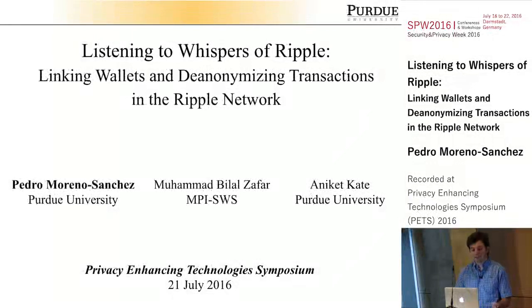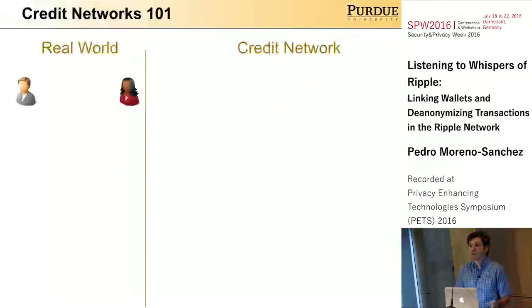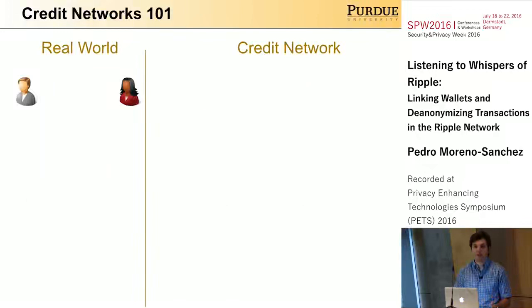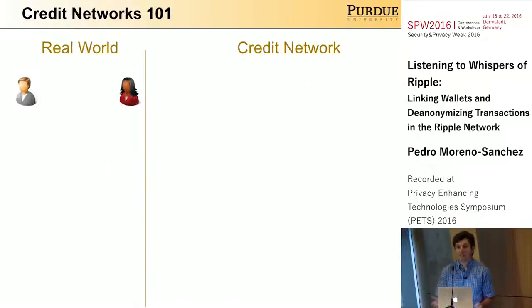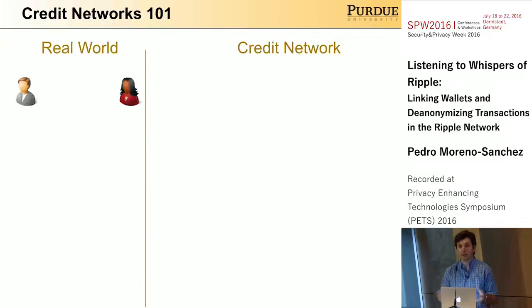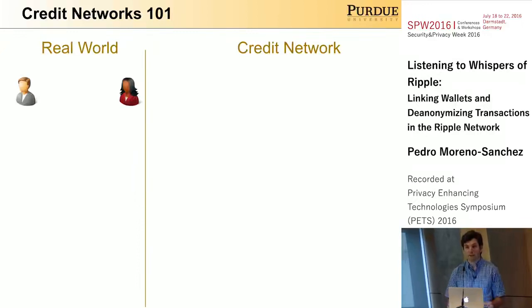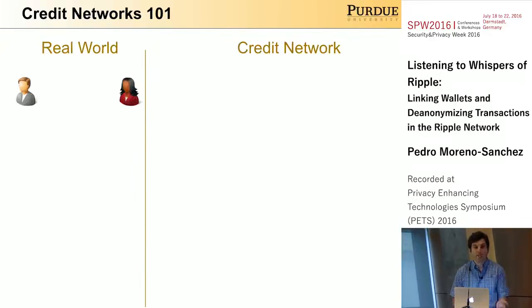Let's first see what is actually a credit network. A credit network is used to represent trust between users via credit allocations.